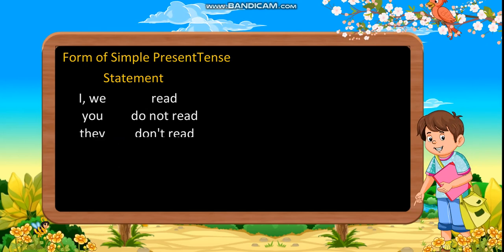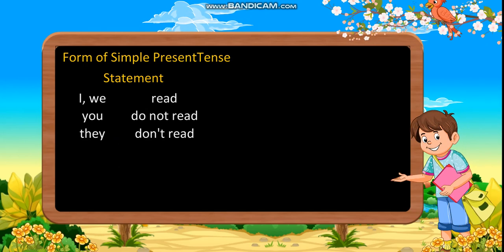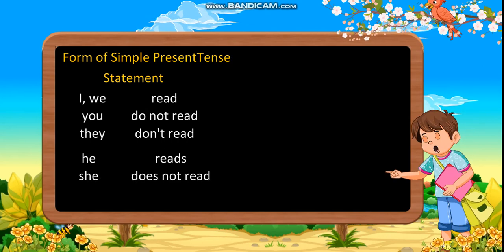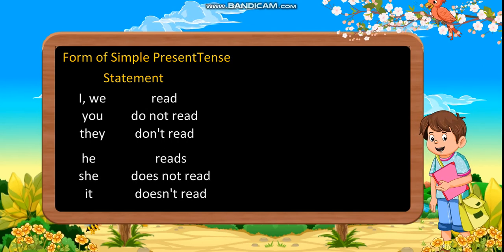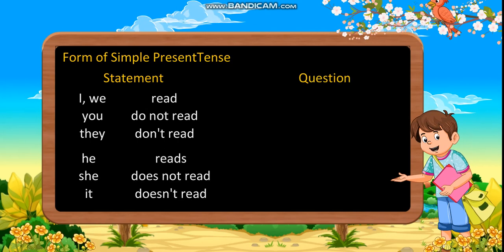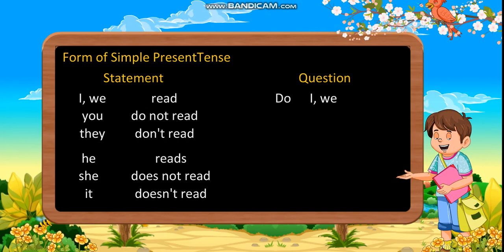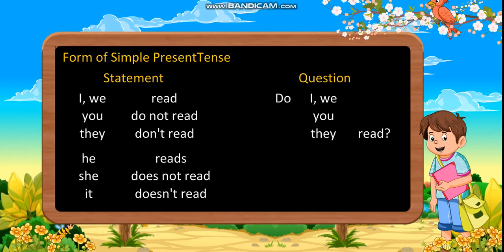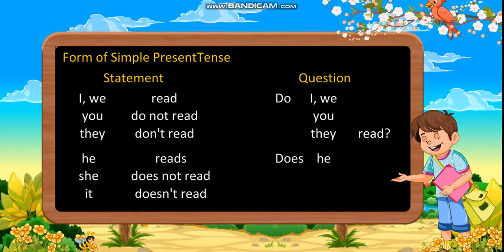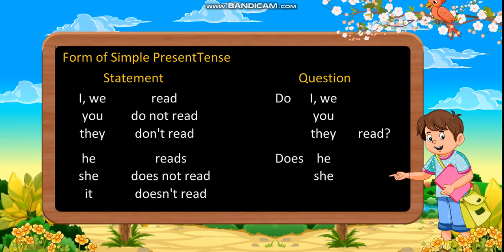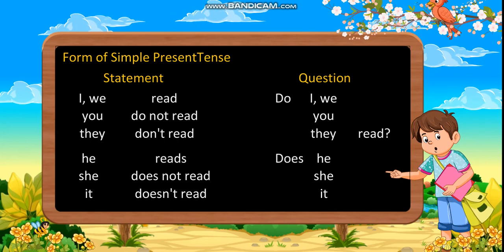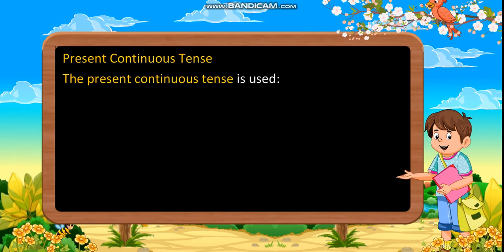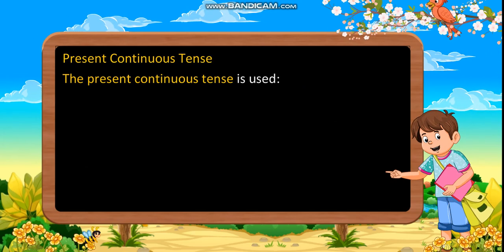Forms of simple present tense — Statement: I/We/You/They read. He/She/It reads. Negative: I/We/You/They do not read / don't read. He/She/It does not read. Question: Do I/We/You/They read? Does he/she/it read?